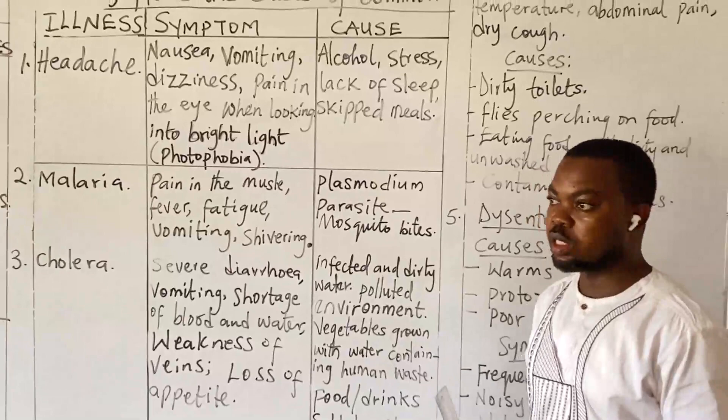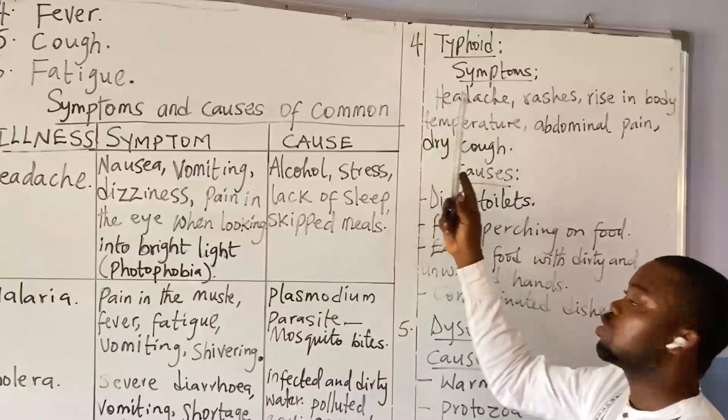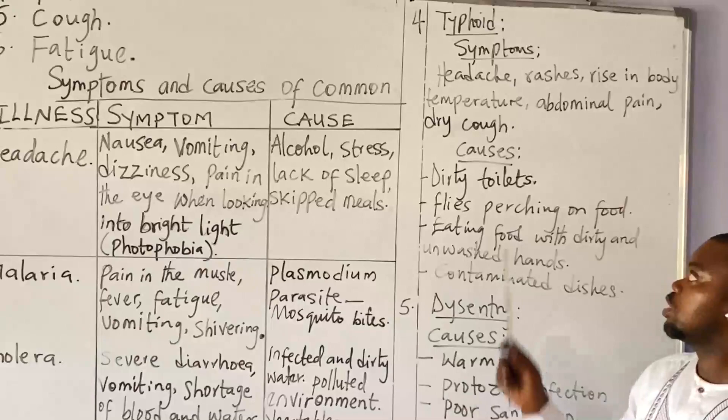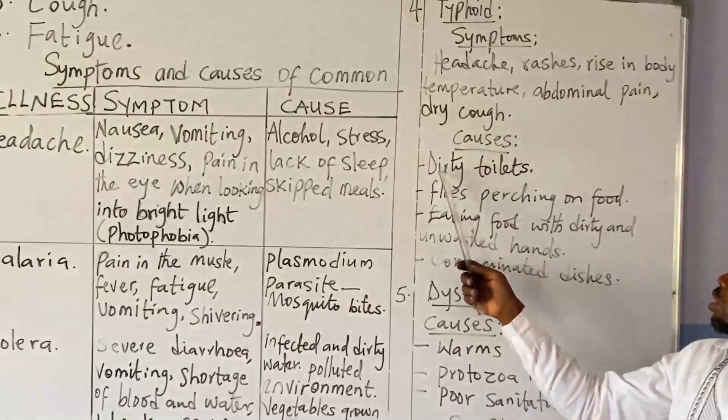Cholera is a dangerous disease or sickness. Number four, we have typhoid. What are the symptoms? The symptoms include headache, rashes, rising body temperature, abdominal pain, and we have dry cough — those are the symptoms of typhoid.